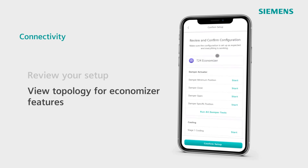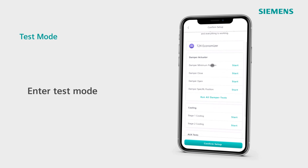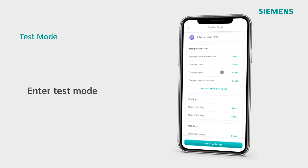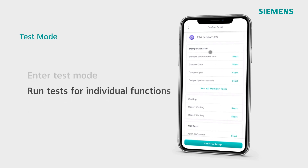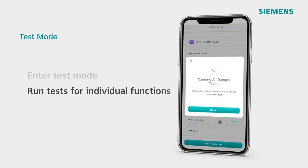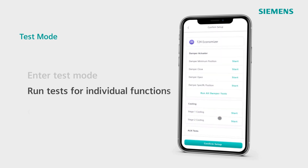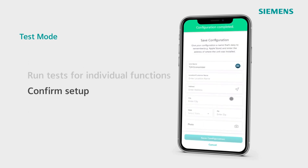Once you confirm your setup, users can enter a test mode to ensure that the Economizer is operating properly. You can test settings and stages for damper actuators, cooling stages, and auxiliary outputs as a group or test them individually. Confirm that everything is running properly, then confirm your setup.